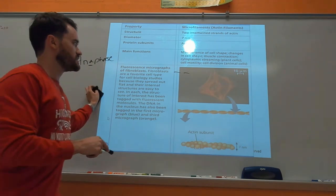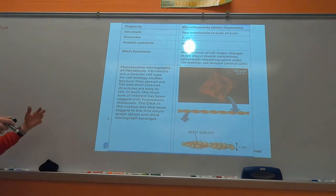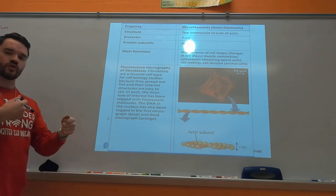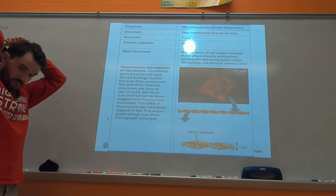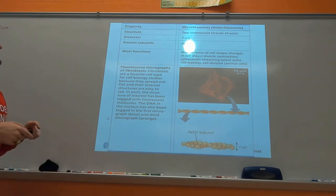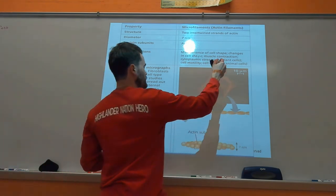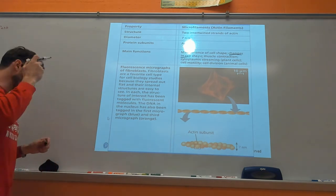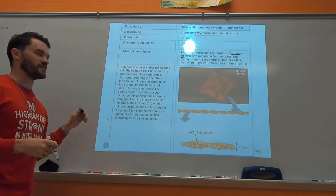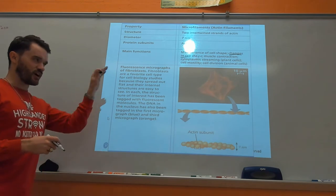Actin is the smallest fiber - two intertwined strands of actin, unlike microtubules which have two different subunit types. It's like a braided rope - two strands wound together, giving a lot of strength. Actin is also fairly flexible, so it's useful for changes in cell shape. It plays roles in muscle contraction and cytoplasmic streaming, which I'll cover with individual slides.